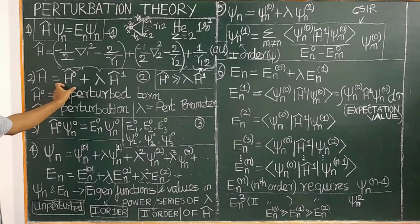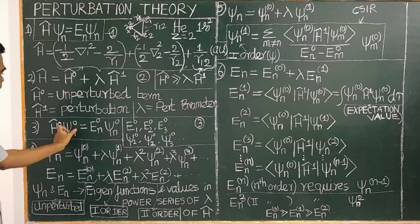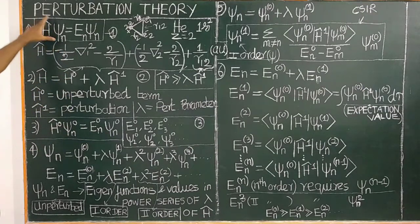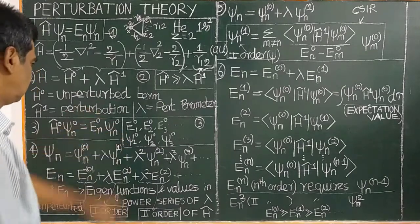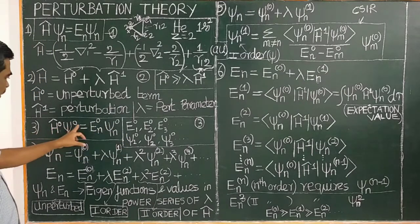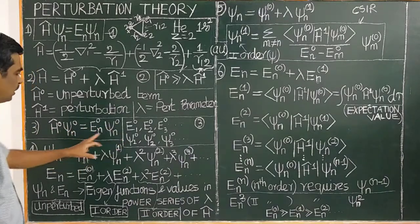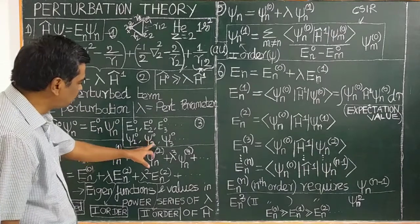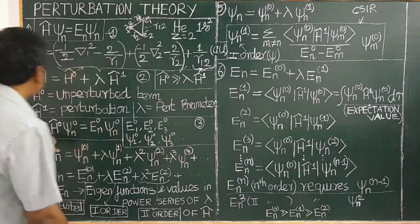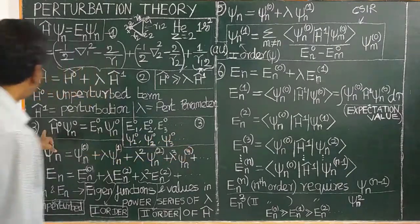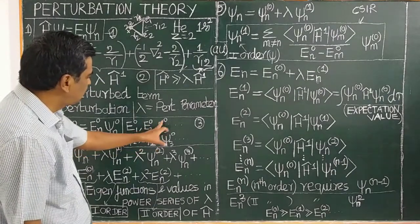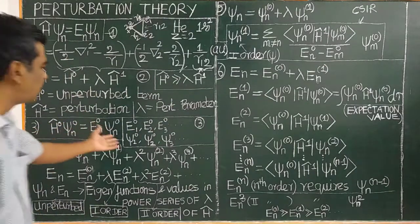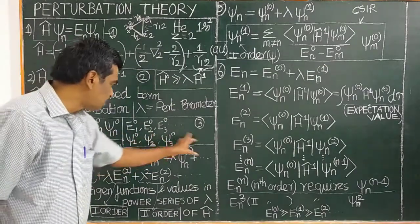The unperturbed Hamiltonian wave equation is H-cap-zero psi-n-zero equal to E-n-zero psi-n-zero. Here psi-1-zero, psi-2-zero, psi-3-zero are the eigenfunctions of operator H-cap-zero, and E1-zero, E2-zero, E3-zero are the corresponding eigenvalues for those wave functions.